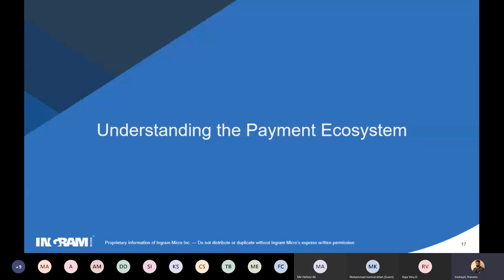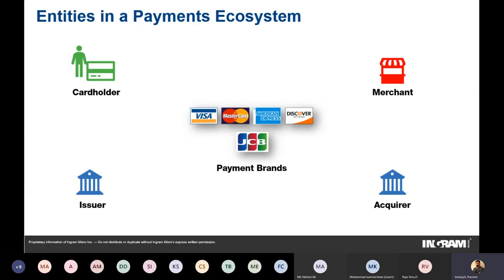Let's jump into understanding the payment ecosystem. Think about the next time you walk into a store and swipe your debit or credit card at a POS terminal to pay 50 or 100 dirhams. What process unfolds? There are different entities in this ecosystem. Assume you are the cardholder walking into a Carrefour store — Carrefour is the merchant. You pull out your credit card and present it at the POS terminal at the cashier. The process involves the issuer, the acquirer, and the five payment brands.